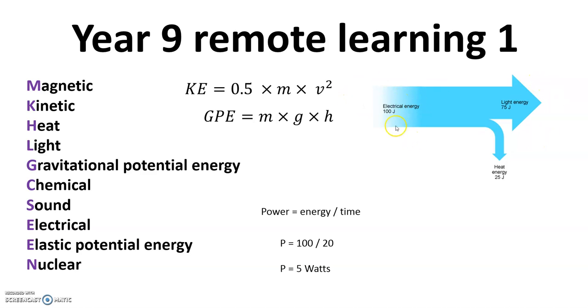Here we've got a Sankey diagram, 100 joules of electrical energy going in, 75 joules coming out usefully as light, and 25 joules as wasted heat energy. 75 plus 25 equals 100. To get the marks on this, the input energy has to equal the total output energy.